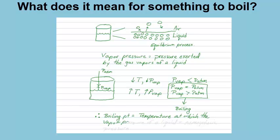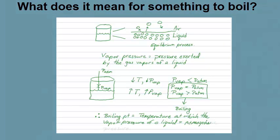So, therefore, the boiling point of a chemical is going to be the temperature at which the vapor pressure of that chemical is equal to the atmospheric pressure.